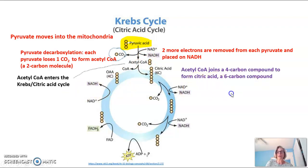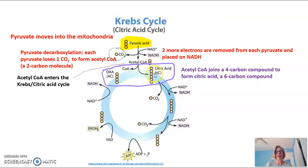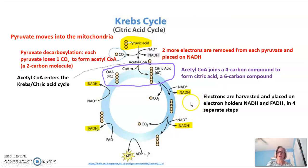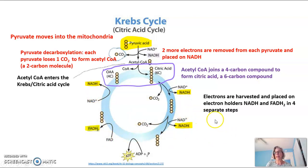Acetyl-CoA combines with a molecule called OAA, which is a four-carbon compound. These carbons plus these carbons make a total of six carbons, forming citric acid — which is where this cycle got one of its names, the citric acid cycle. This six-carbon compound now goes through the citric acid cycle. In four separate steps, electrons are harvested from intermediates and placed onto the electron holders NAD+ to become NADH, and another electron holder FAD to become FADH2. FAD and FADH2 are analogous to NAD+ and NADH — simply different electron holders that pick up electrons in one specific step of the Krebs cycle.